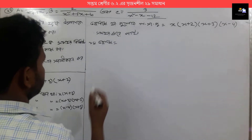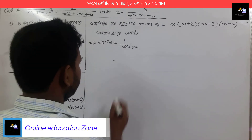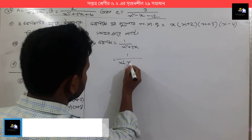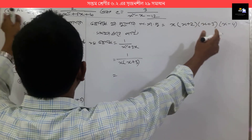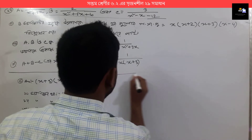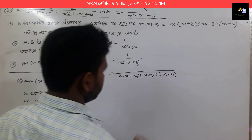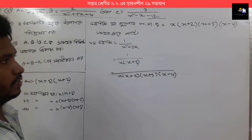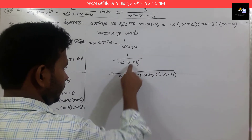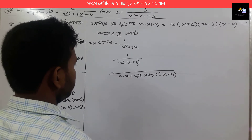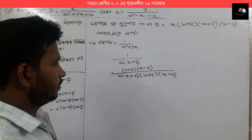1 by x squared plus thrice x equals 1 over x into x plus 3. Then x into x plus 2, x plus 3, x plus 4. We write x and x plus 3, x plus 2, x minus 4 — that is x plus 2 into x minus 4.